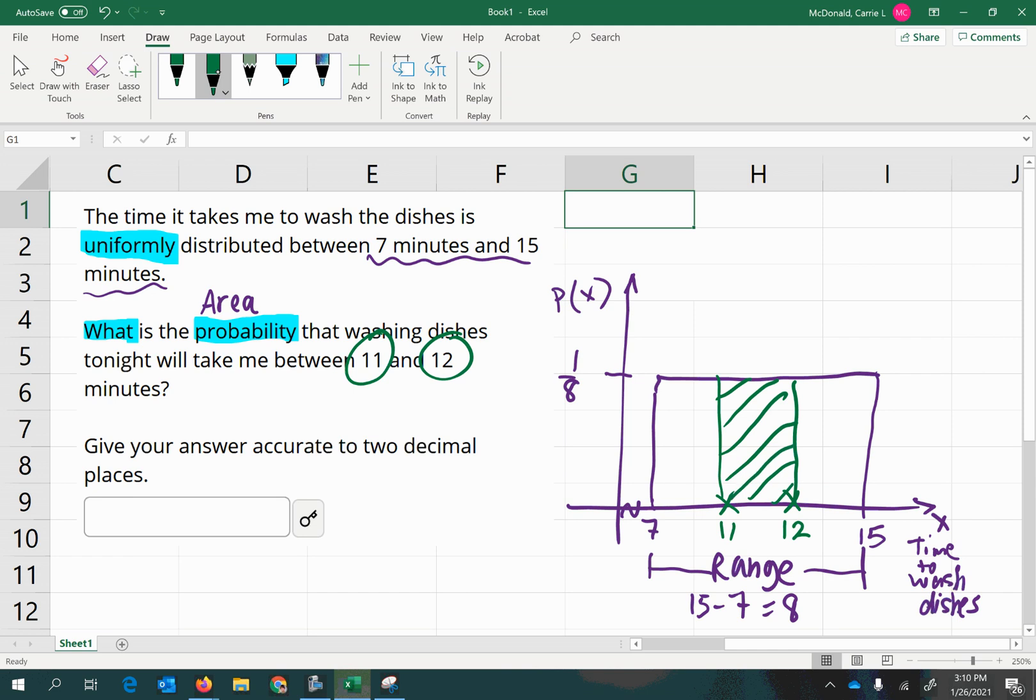And that means I'm looking for this rectangular area to find the probability. Remember, area equals probability. Probability equals area as we're working on these types of problems. So, now I need the area of this rectangle. So, what is the base of that rectangle? So, the base here, or the width, has a distance of 12 minus 11. So, it's 1. And what is the height of the rectangle? It's 1 eighth.